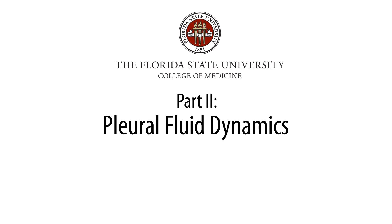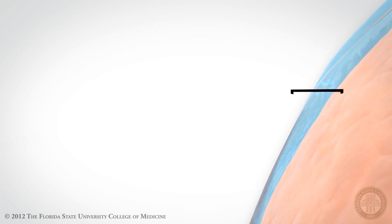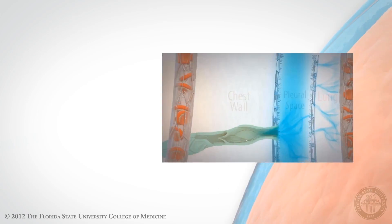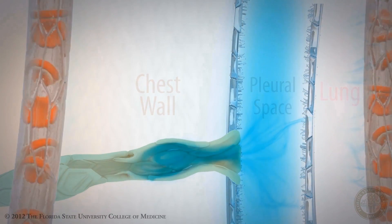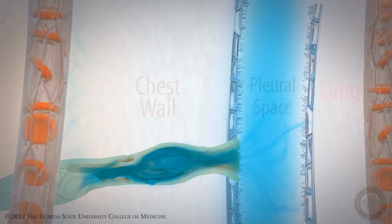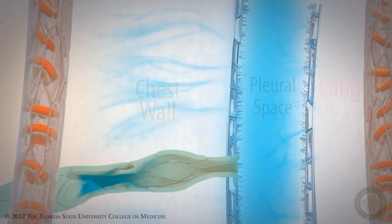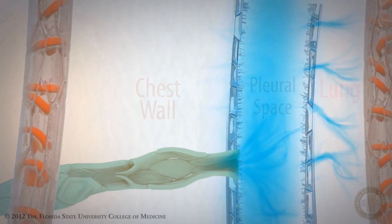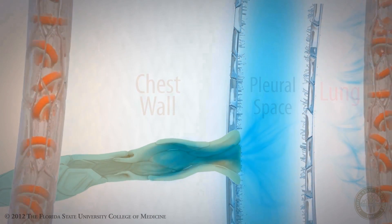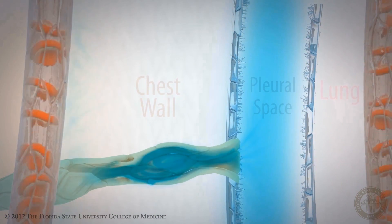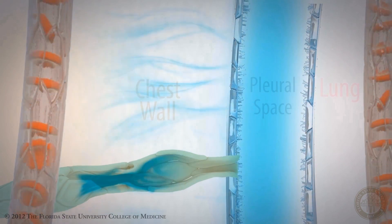Where does pleural fluid come from? For a very long time we weren't exactly certain how this came about, but during breathing, the recoil of the lungs creates a negative pressure in the pleural space, especially towards the apex of the lung.